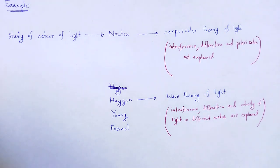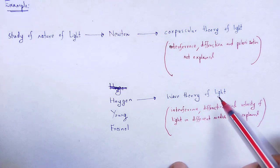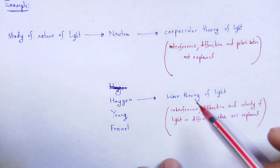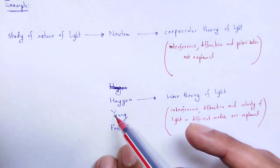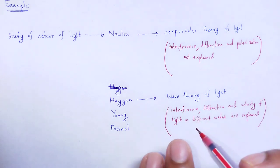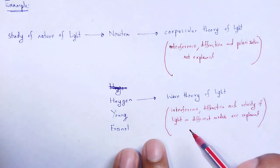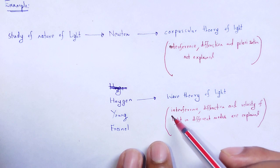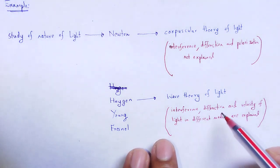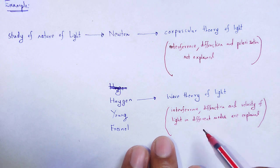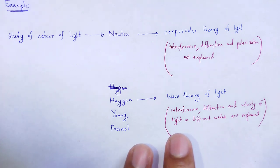By using the wave theory of light proposed by Huygens, Young and Fresnel also used that theory and by using it the phenomena like interference, diffraction, and the velocity of light in different media are easily explained.